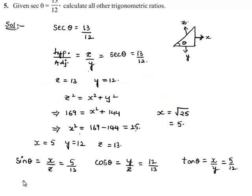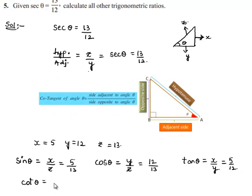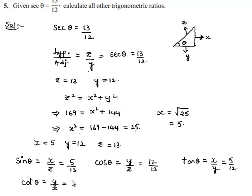Now let us also find the value of cot theta, which is the inverse of tan theta, equal to adjacent side by opposite side — y by x — which is 12 by 5. And cosec theta is the inverse of sin theta, therefore cosec theta equals 1 by sin theta, which is 1 by (5 by 13), giving 13 by 5.